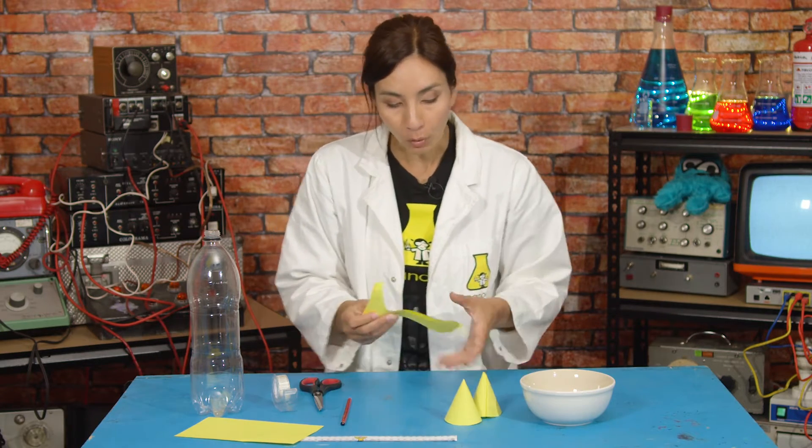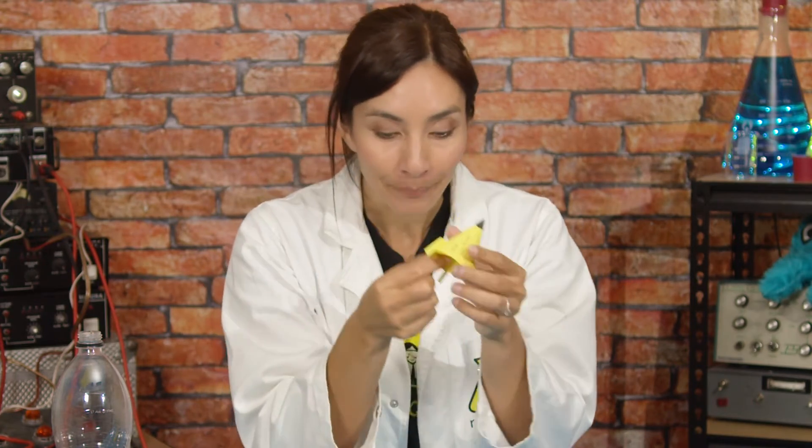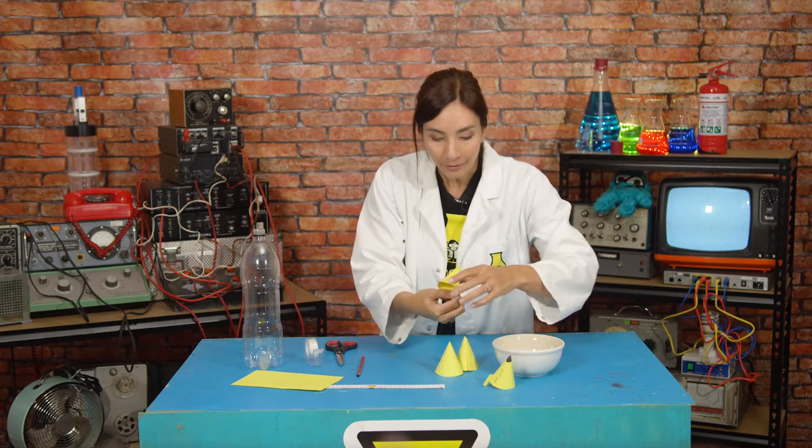Here we have my Rocket Rodent. I've just cut out some little ears here, and my Nano Rocket. I've cut out some fins there. So we're going to leave those here.